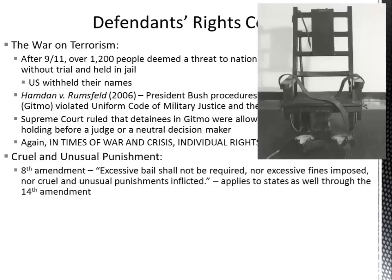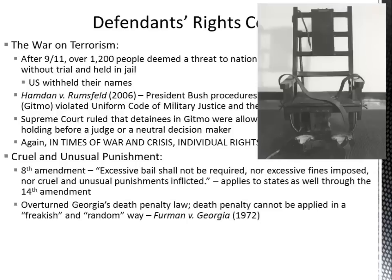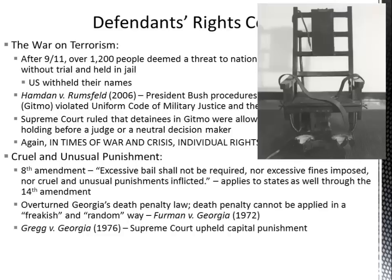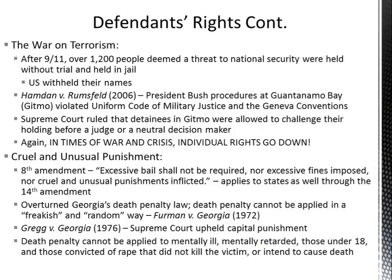Let's talk about cruel and unusual punishment. The Eighth Amendment states that excessive bail shall not be required, nor excessive fines imposed, nor cruel and unusual punishments inflicted. This applies to states through the incorporation doctrine and the 14th Amendment. The Supreme Court overturned Georgia's death penalty law in Furman v. Georgia, saying it could not be applied in a freakish and random way. In 1976, in Gregg v. Georgia, the Supreme Court upheld capital punishment, but the death penalty cannot be applied to the mentally ill, mentally retarded, individuals under 18, or those convicted of rape who did not kill or intend to cause death.